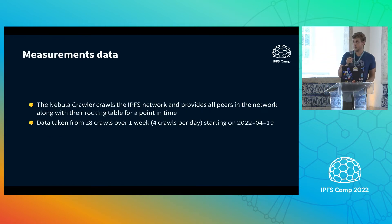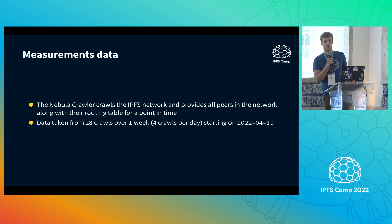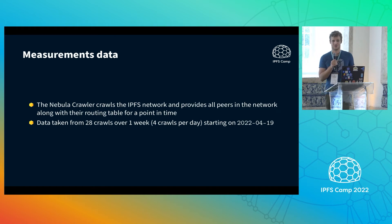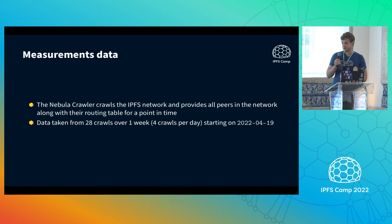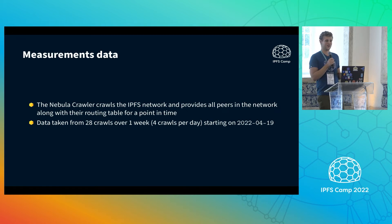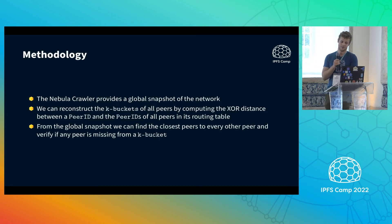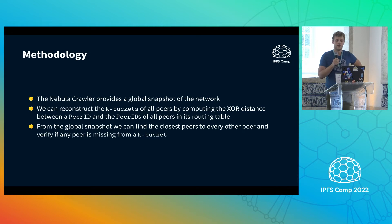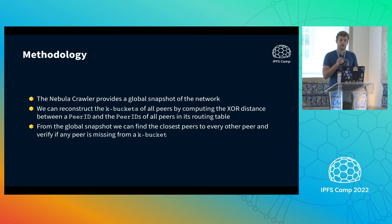We performed some measurements using the Nebula crawler to crawl the network. It has techniques to get the routing table of every single peer in the network, which is pretty awesome. We took data from April of this year. The Nebula crawler gives us a global snapshot of the routing tables of all peers at one specific point in time. From this we know all peers in the network and all routing tables, so we can reconstruct the K-buckets for every single peer.